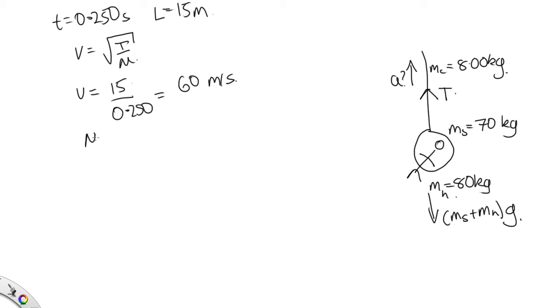Now the mass per unit length for the cable is equal to 8 over 15, which gives us 0.5333 kilograms per meter. So substituting this in, we have that the tension is equal to v squared mu, just rearranging this. And now that's 60 squared times 0.5333. Solving that on the calculator, we end up with 1,919 newtons as the tension in this cable.